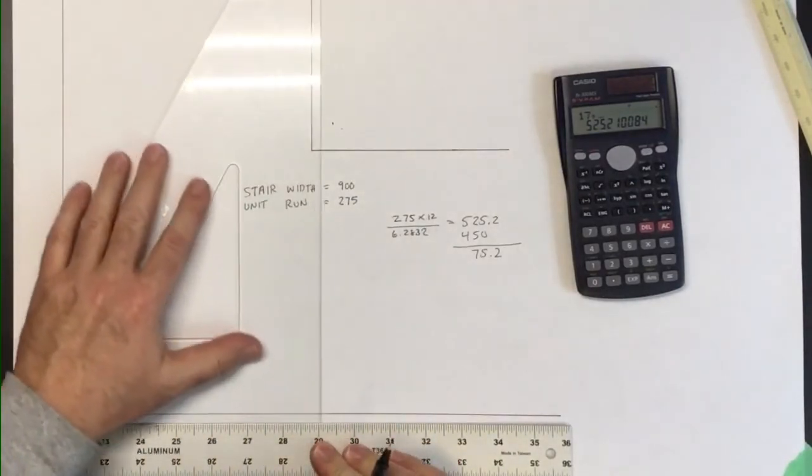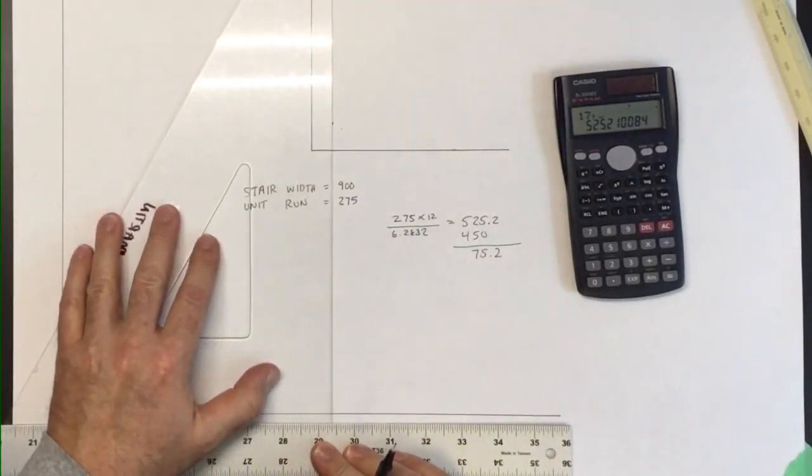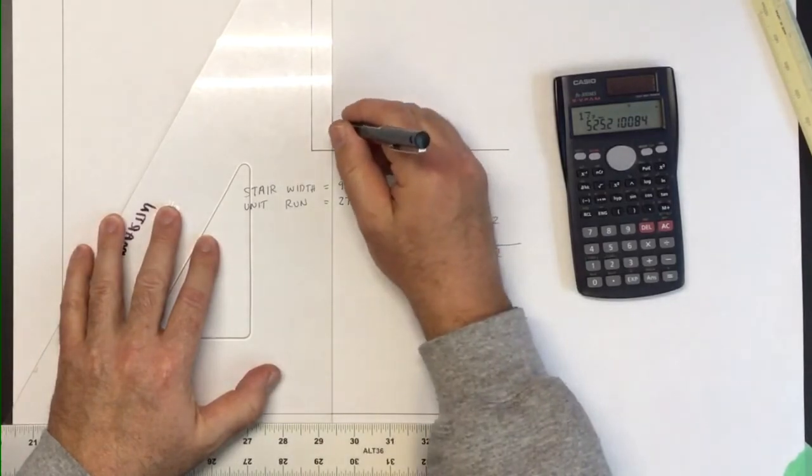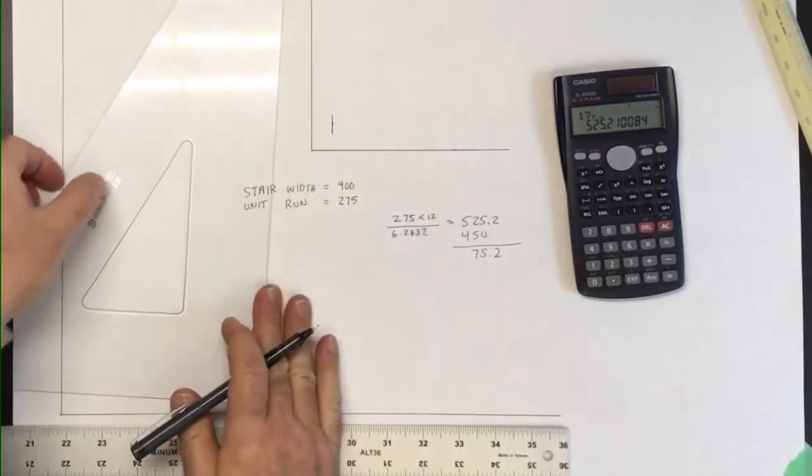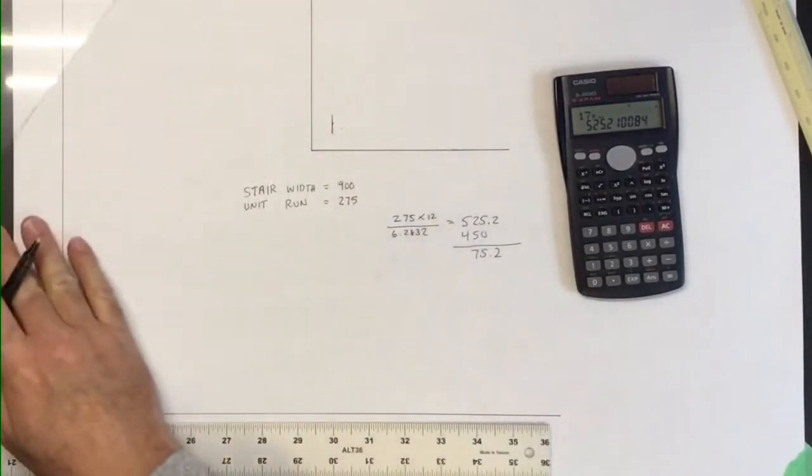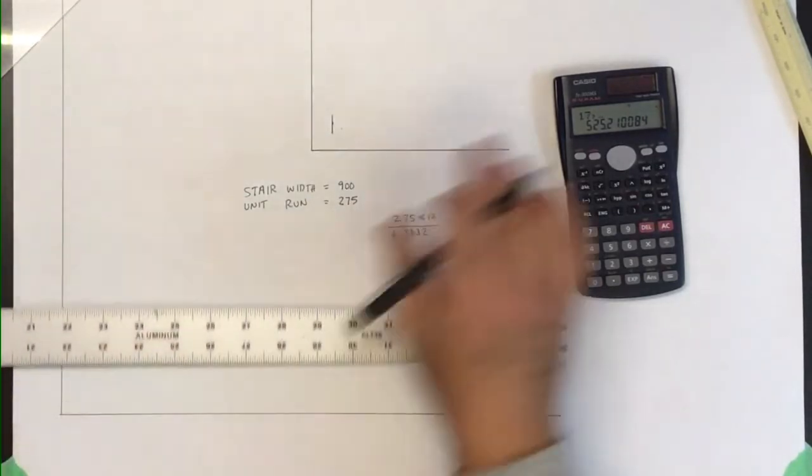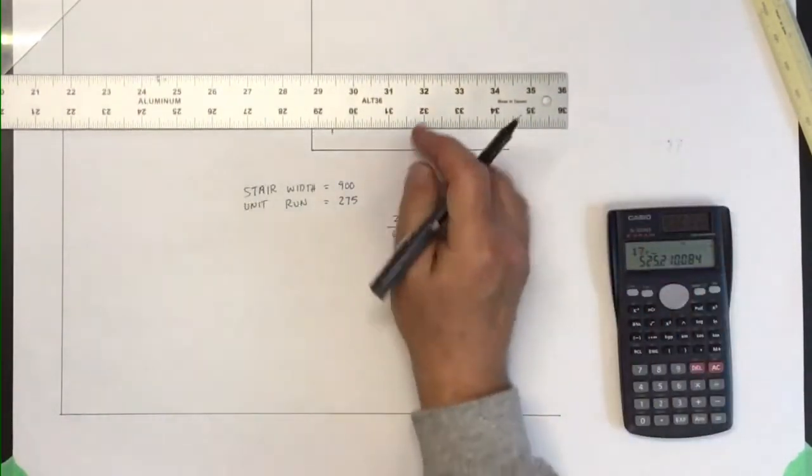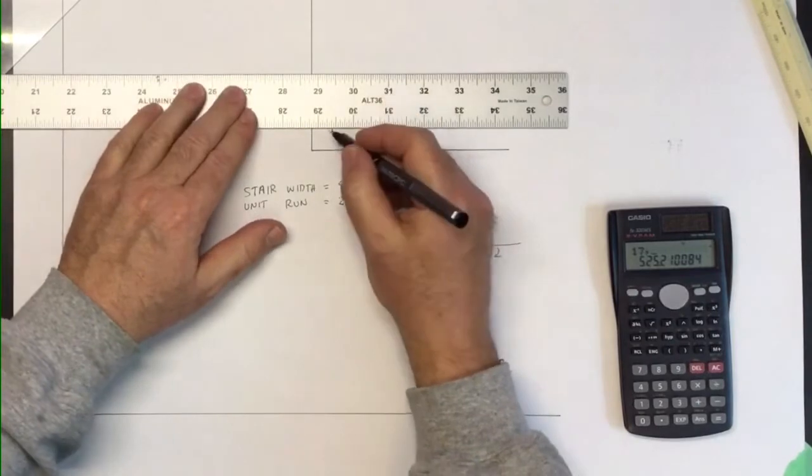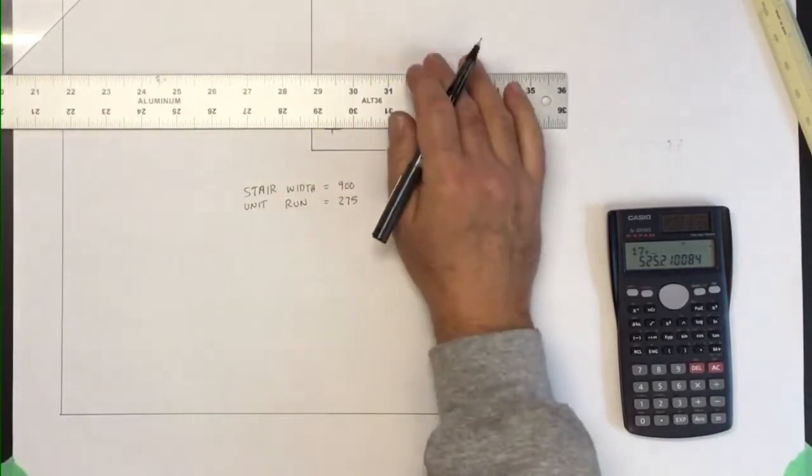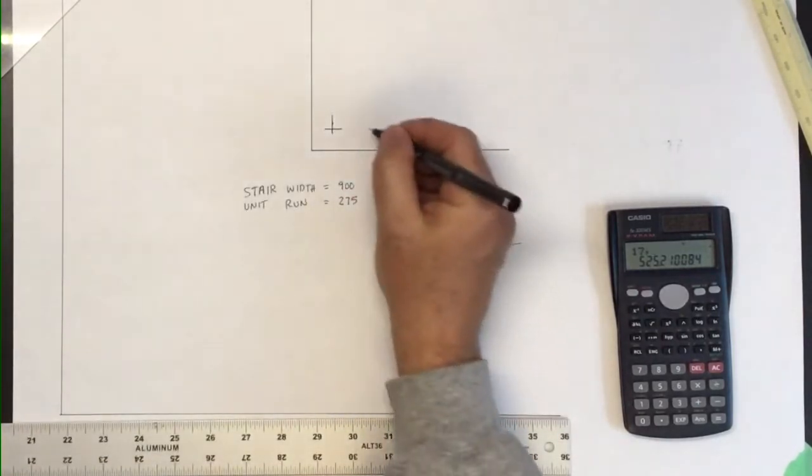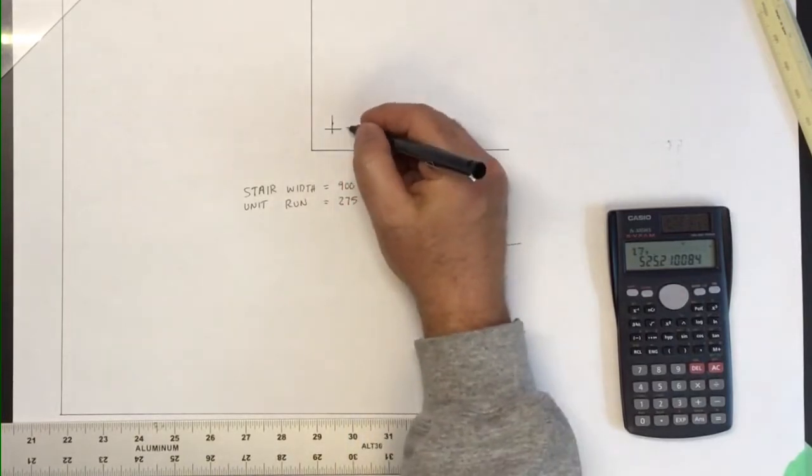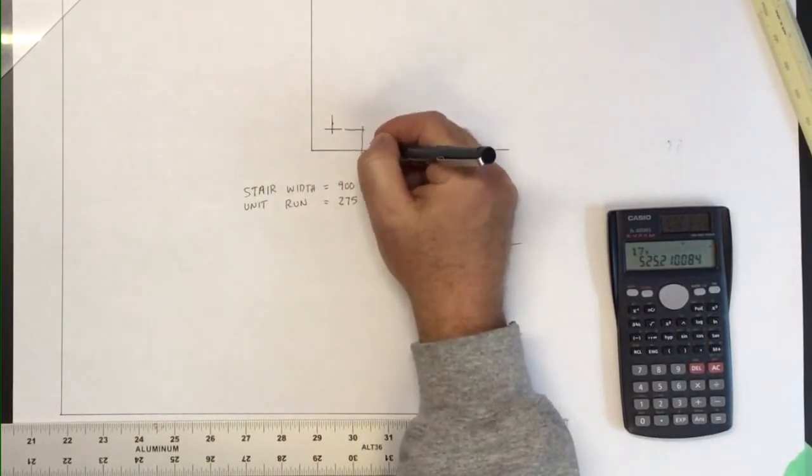And I'll just extend those two lines so they intersect, somewhere there, and right about there. So that's my offset here. We can say that this is 75.